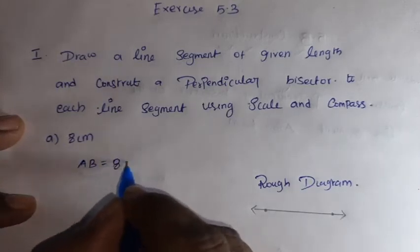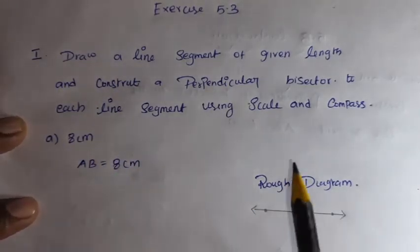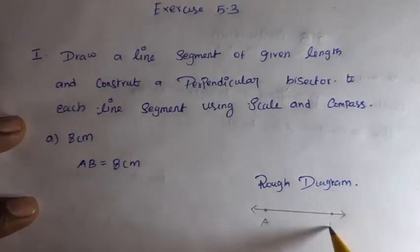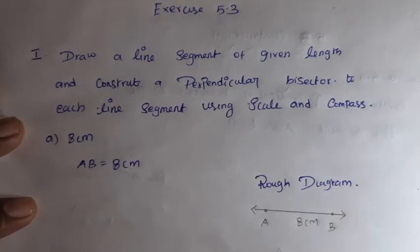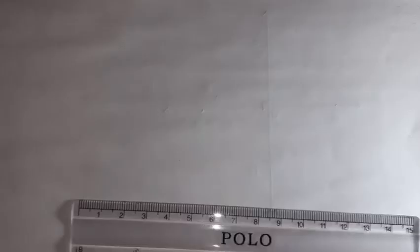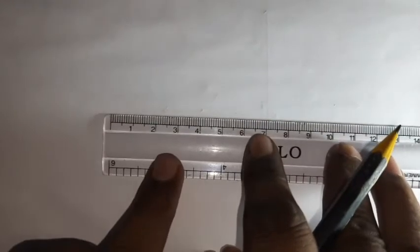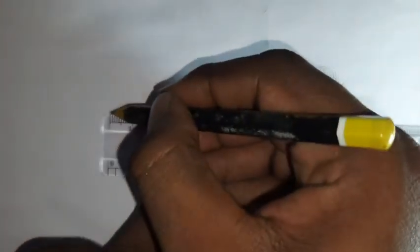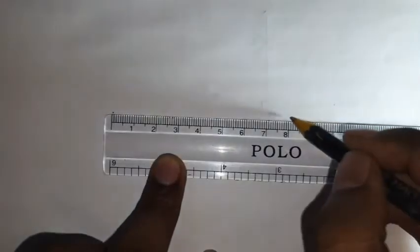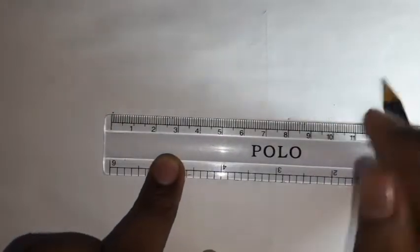AB is equal to 8 centimeters. The point is called A, another point is called B. So measurement 8 centimeters. The rough diagram. Next, the main diagram.